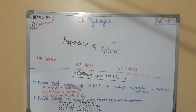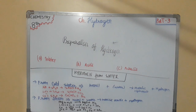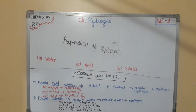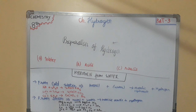Second point: The reaction of sodium with cold water leads to the melting of sodium into a silvery globule, causing it to move about in the water. This makes the collection of hydrogen difficult; to avoid this, sodium is wrapped in a piece of small wire gauze. Third point: Calcium is an expensive element. Due to the above reasons, sodium, potassium, and calcium are not preferred for the preparation of hydrogen.